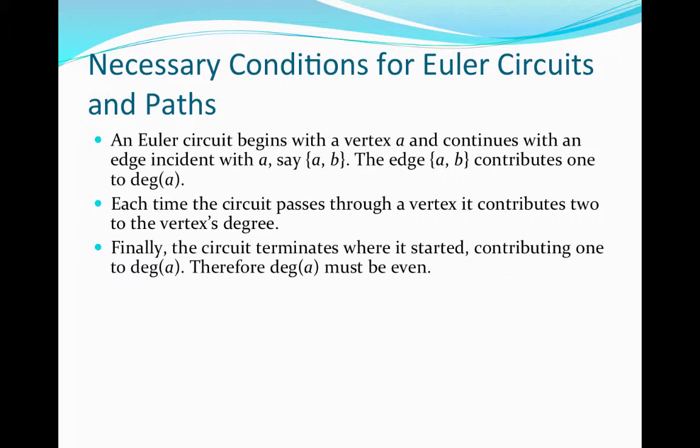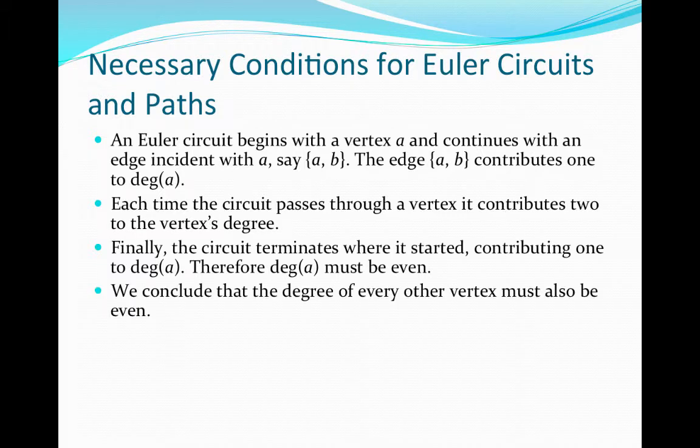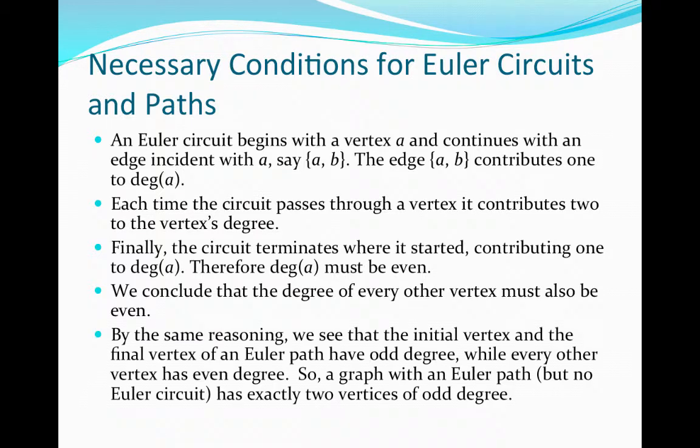It could have an even degree higher than 2 depending on how many edges are incident with that vertex, because we would need to traverse each of those edges exactly one time. Combining that with the previous characteristics, we can also conclude that the degree of every other vertex must also be even, because every time we enter and leave that vertex through different edges, that contributes a degree of 2. So every vertex in a graph with an Euler circuit has even degree.